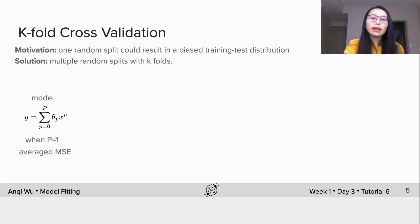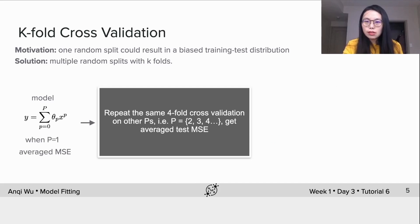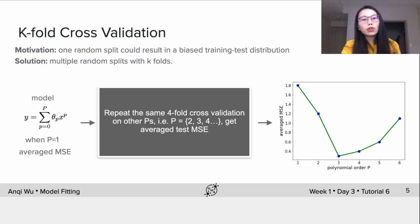Remember, this is only a k-fold cross-validation for one model. In order to do model selection, we need to repeat the same four-fold cross-validation on other models with p equals 2, 3, 4. Notice that for each p, the folds we use are the same. Finally, we could plot average MSE for all polynomial orders and pick the best model with the smallest error.